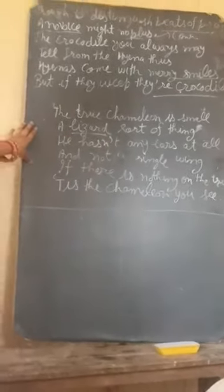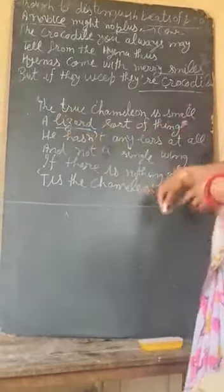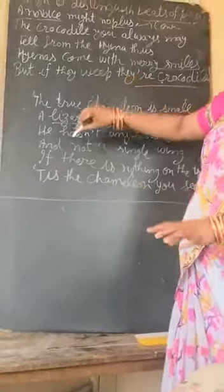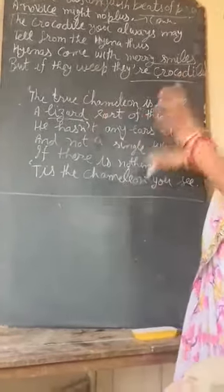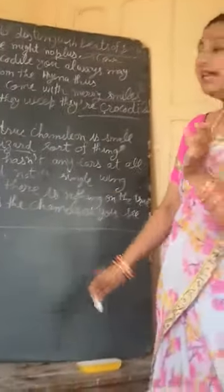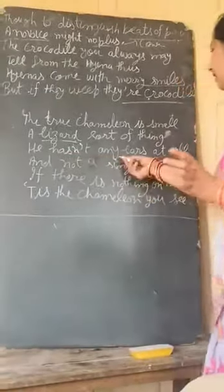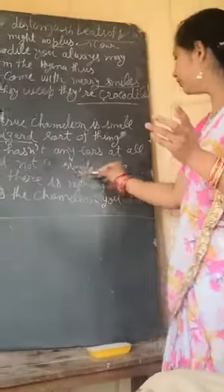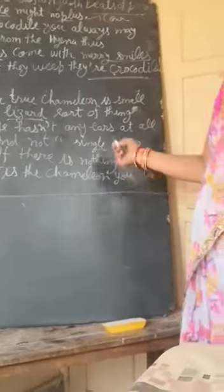We will continue the last paragraph of the poem 'How to Tell the Wild Animal.' The last paragraph defines the difference between a chameleon and a lizard. The true chameleon is very small. He has no ears. If there is nothing visible on the tree, what is the identification?